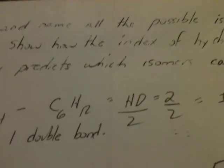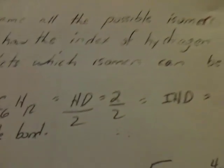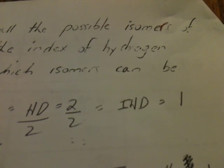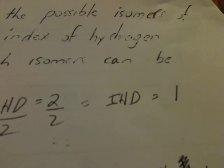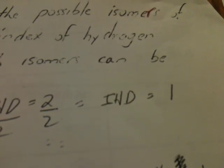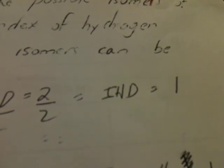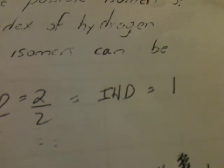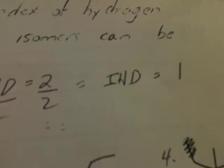Dividing the hydrogen deficiency by 2 will give us the index of hydrogen deficiency, which signifies the unsaturation of the molecule. An index of hydrogen deficiency of 1 means the molecule either has one ring or one double bond.